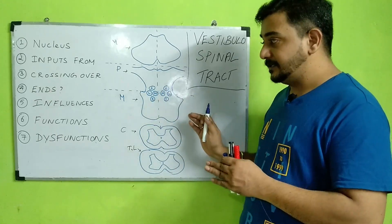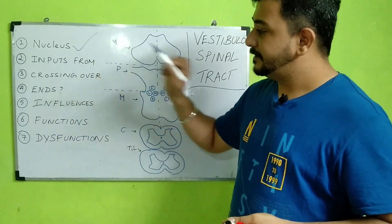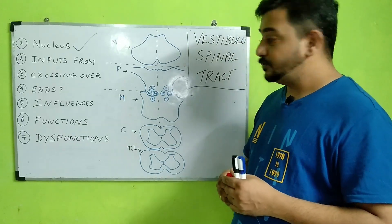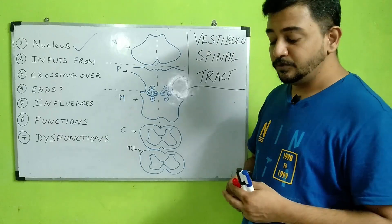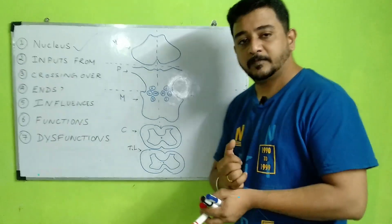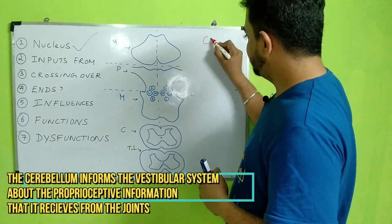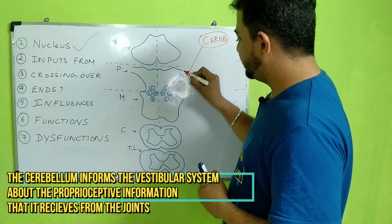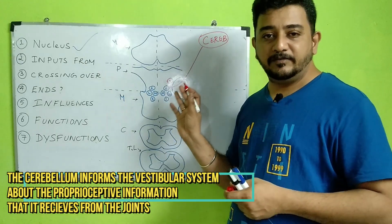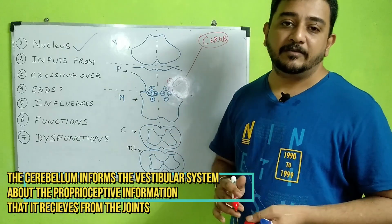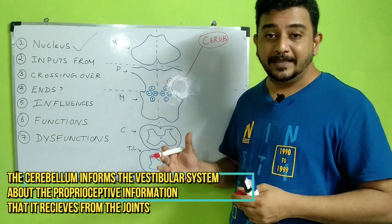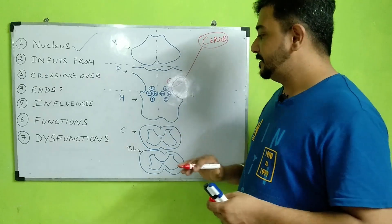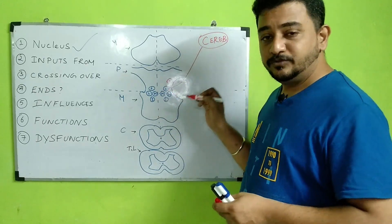The next question is: from where does the vestibulospinal tract receive its input? This tract is very essential for maintaining balance, so it receives information from the same-side cerebellum. That information is excitatory — the cerebellum excites the discharge of the vestibulospinal tract. Whatever function the vestibulospinal tract is performing, the cerebellum is going to facilitate that.